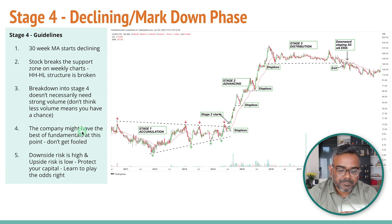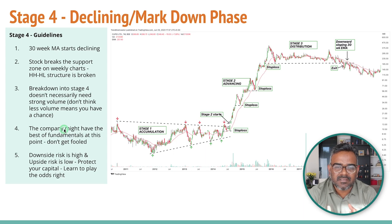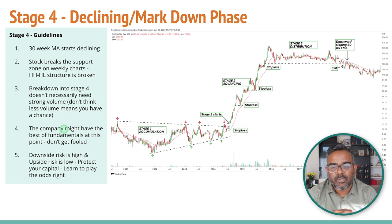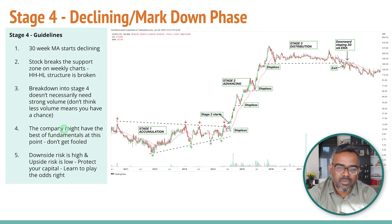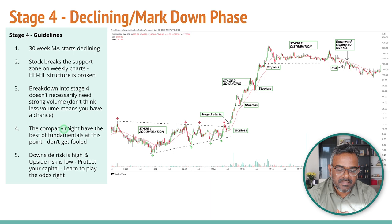Rule number four: the company might have the best fundamentals at this point — don't get fooled. We've had so many cases: Aarti Drugs, Neuland Laboratories, so many different stocks in the pharma sector in 2021 which were doing so well. Everyone thought it would be amazing, but then the pharma numbers came in and the stocks were already in a downtrend. Don't get fooled by great news around any company in terms of fundamentals.